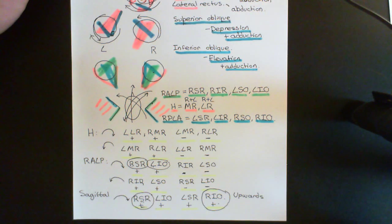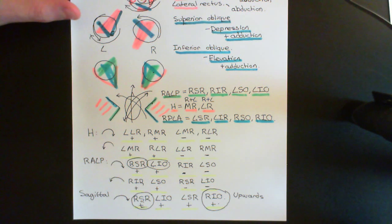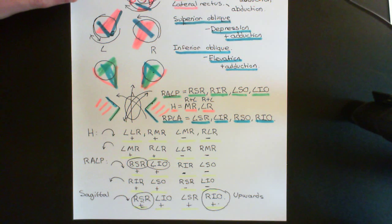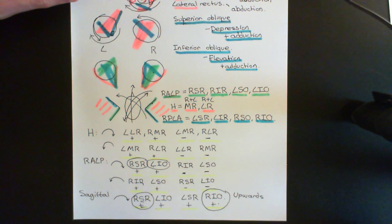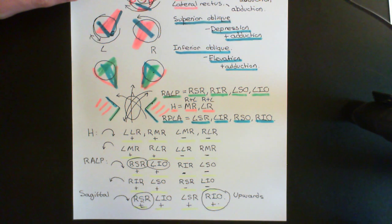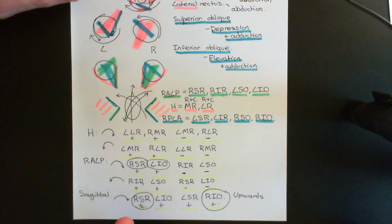Welcome back to this next video in which we are discussing the vestibular system. We're currently in the process of discussing the vestibulo-ocular reflex. In particular, we're looking at the slow phase of the vestibulo-ocular reflex, which is where when you rotate your head, your eyes rotate in the exact opposite way so that the retinal image can be fixed. The vestibular system, and in particular the semicircular canals, are incredibly important in this.